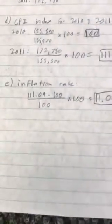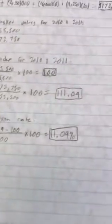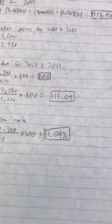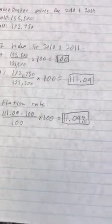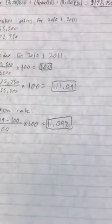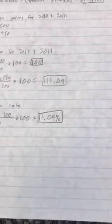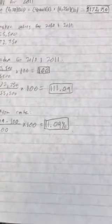The inflation rate is 111.09 minus 100, divided by 100, and then you times that all by 100, and you get 11.09%. And there you have it.